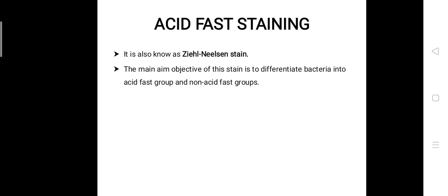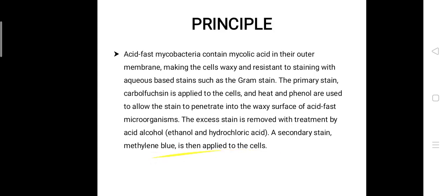The main aim or objective of this stain is to differentiate bacteria into acid fast group and non-acid fast group. The principle of this stain is that acid fast mycobacteria contain mycolic acid in their outer membrane.